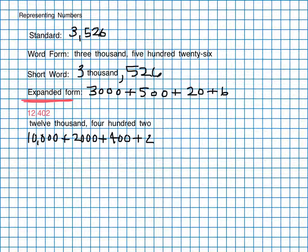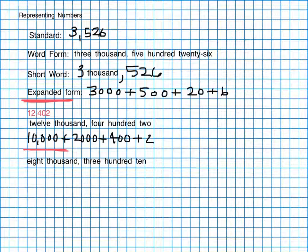The next one is actually going to be in written form, word form, and you're going to have to convert it to the others. And this one is eight thousand three hundred ten. Now why don't you put that in standard form and expanded form. So pause the video, get to work. In standard form we're going to write eight thousand three hundred ten.